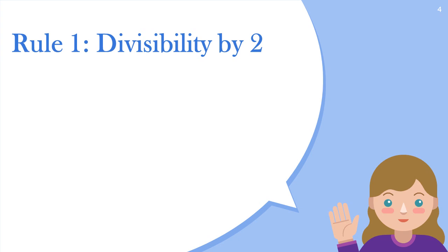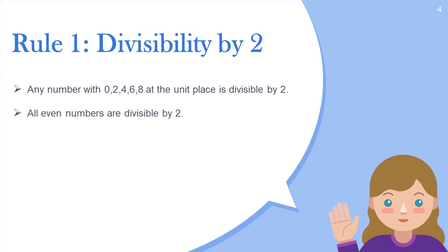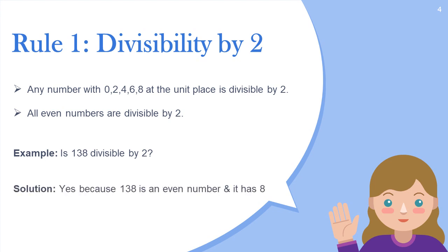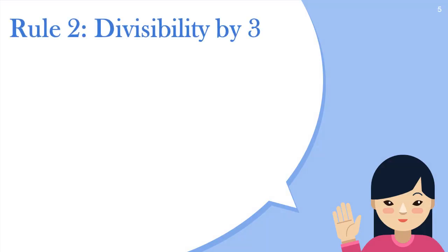All even numbers are divisible by two. For example, is the number 138 divisible by two? The answer is yes, because 138 is an even number and it has the digit eight at its unit place. According to the rule, it is divisible by two.